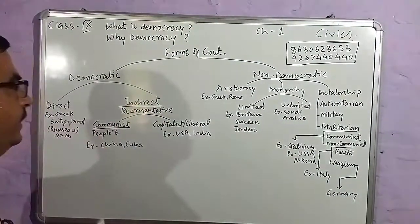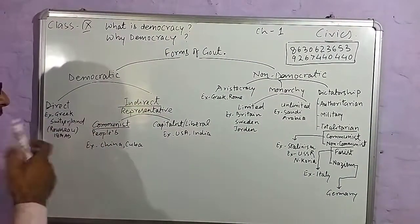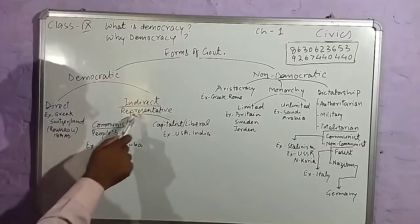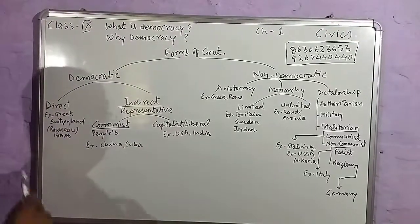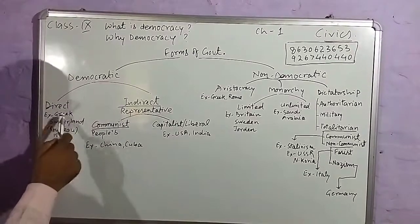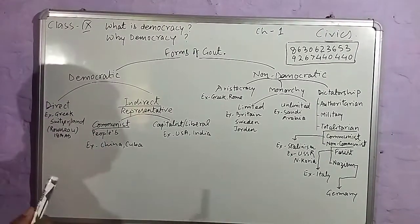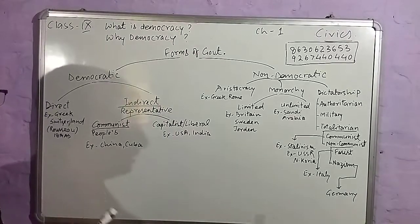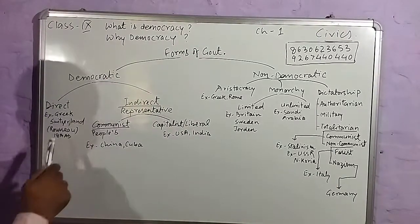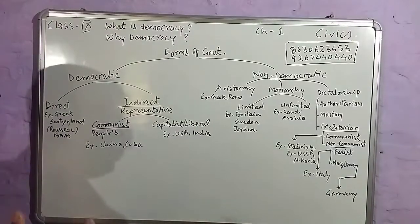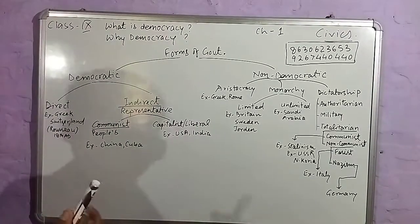The democratic form of government is divided into two types: direct democracy and indirect democracy. Direct democracy was practiced in the ancient Greek world, and in the present time it is seen at the lower level in Switzerland. The idea of direct democracy in the 18th century is also written in our book.